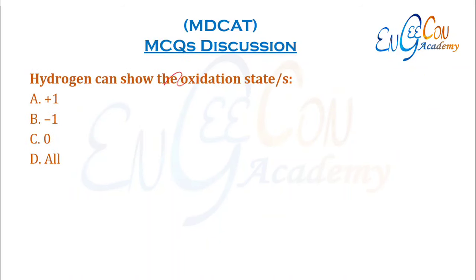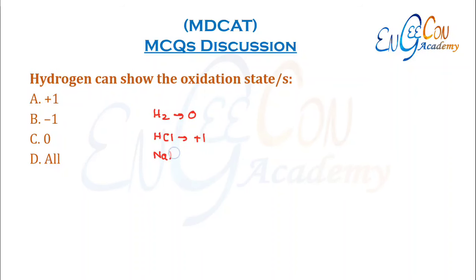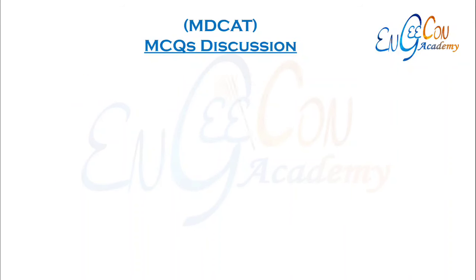Hydrogen can show which oxidation states? In H2, hydrogen is 0. With non-metals, hydrogen is +1. With metals, hydrogen is −1. So hydrogen shows all of these oxidation states: 0, +1, and −1.